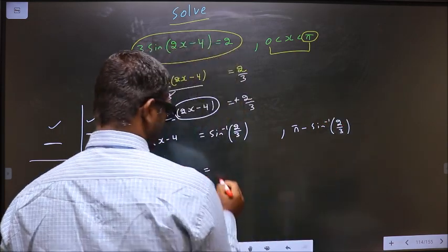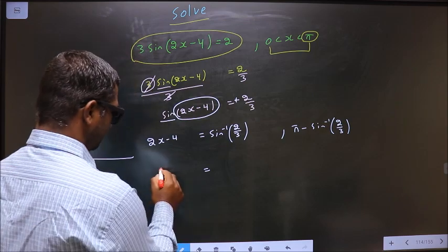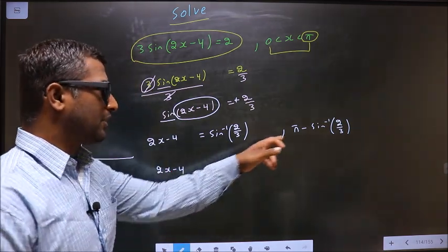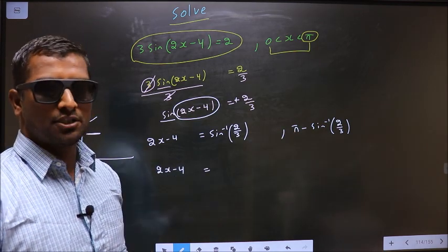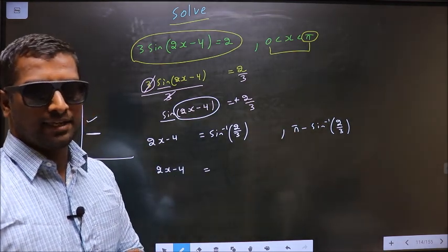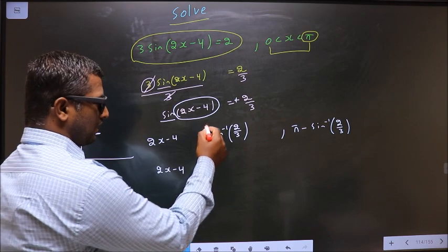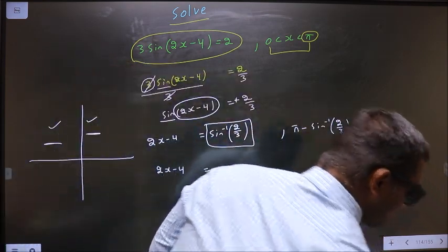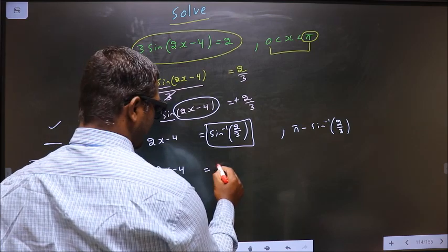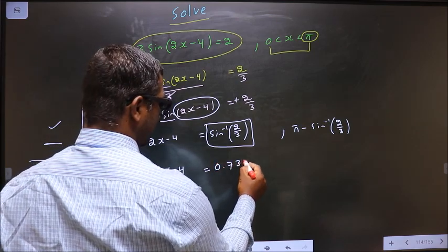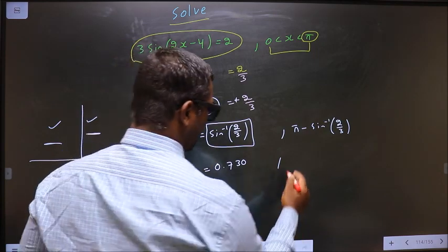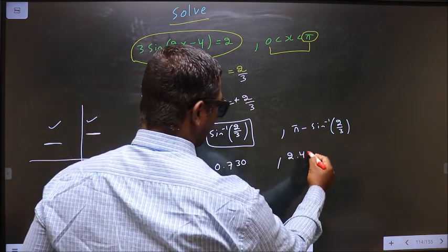Now before you calculate this, make sure your calculator is in radians mode. Now calculate this, you should get 0.730. Calculate this, you should get 2.412.